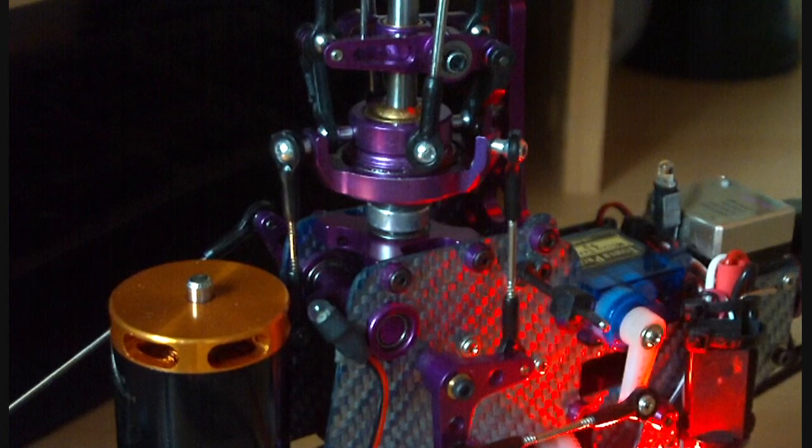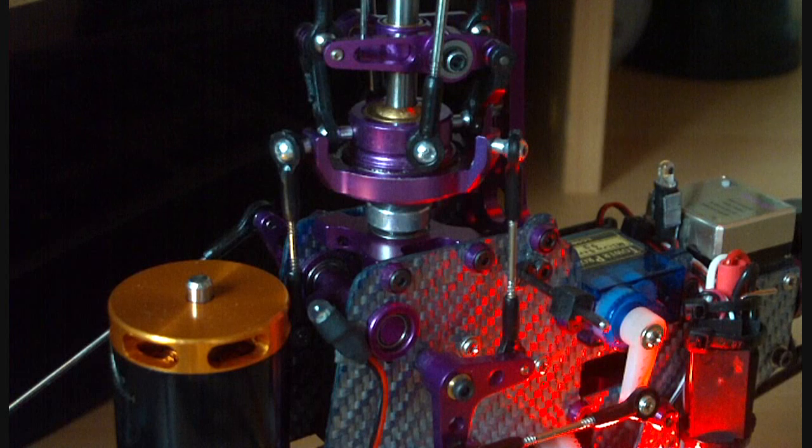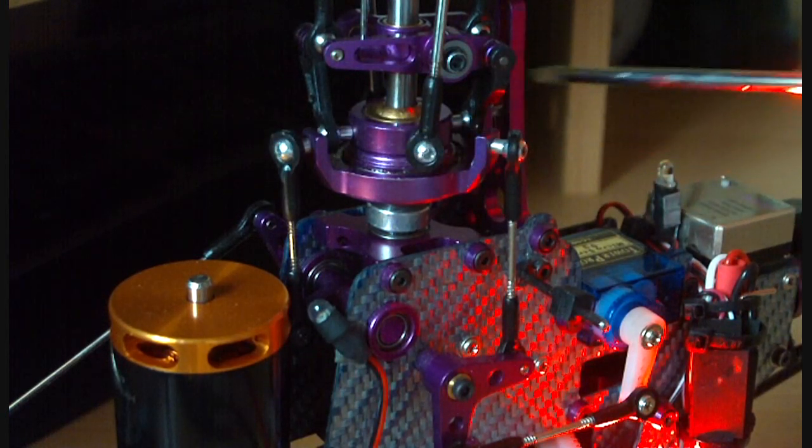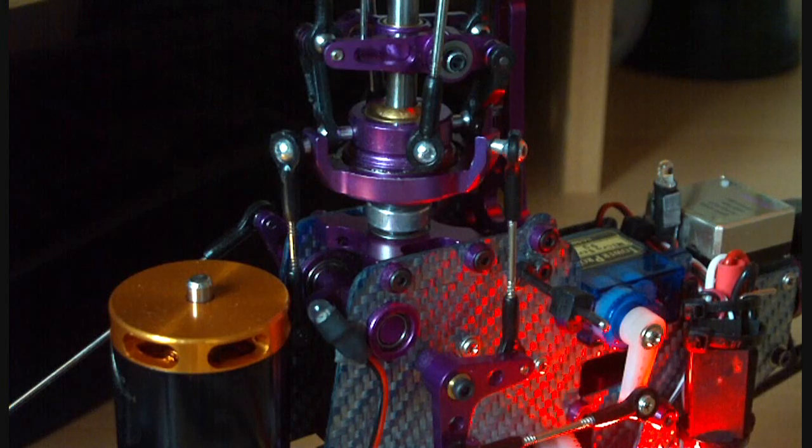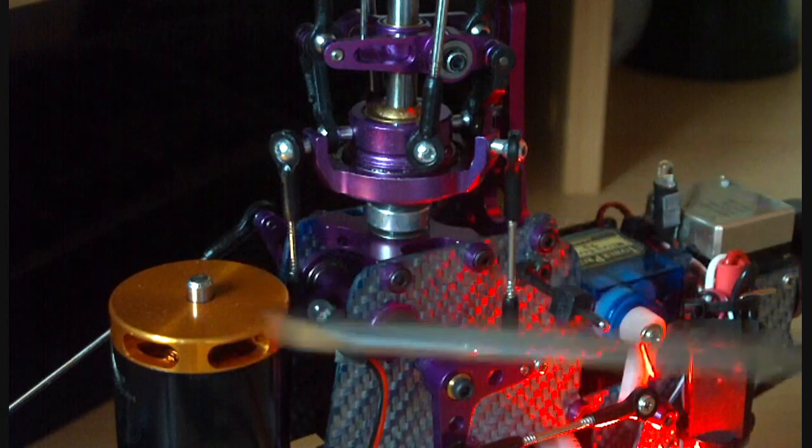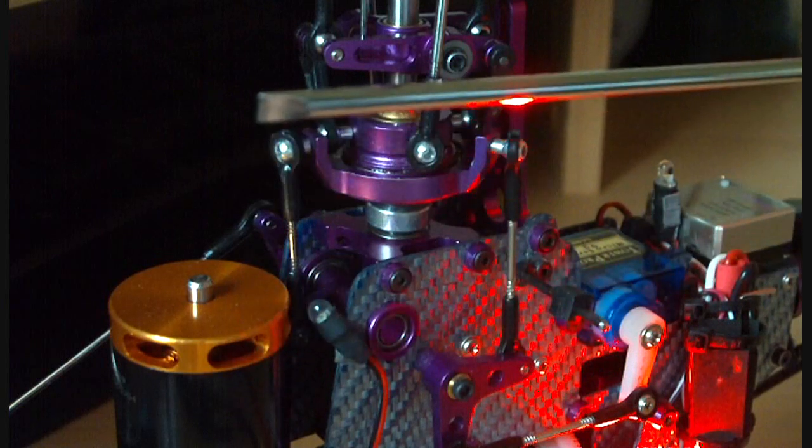The next thing we'll talk about is Swashmixes. First of all, what are they? Well, Swashmixes are the clever part inside the transmitter that makes all of these three links at 120 degrees operate the Swashplate in three dimensions. So that's not only tilting backwards and forwards, tilting side to side, but also moving up and down.